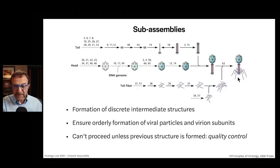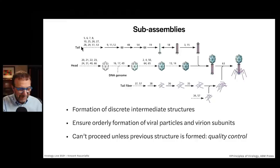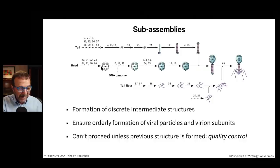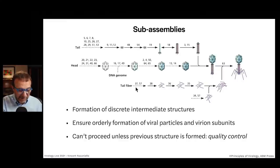An example is shown here for a bacteriophage. The end result is a tailed bacteriophage with an icosahedral head, a helical tail, and tail fibers. But there are different sub-assemblies made: first we assemble a base plate, then we make a tubular structure which gets surrounded by an additional protein to make the tail. Meanwhile the head is assembled — the icosahedral capsid — the DNA genome is put into it, and that's added to the tail. Tail fibers are made separately and then added.